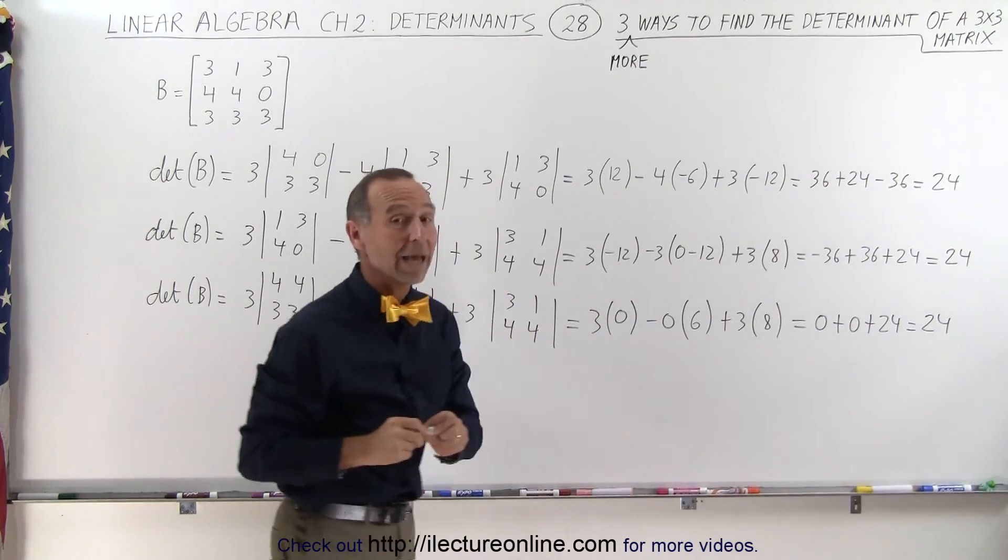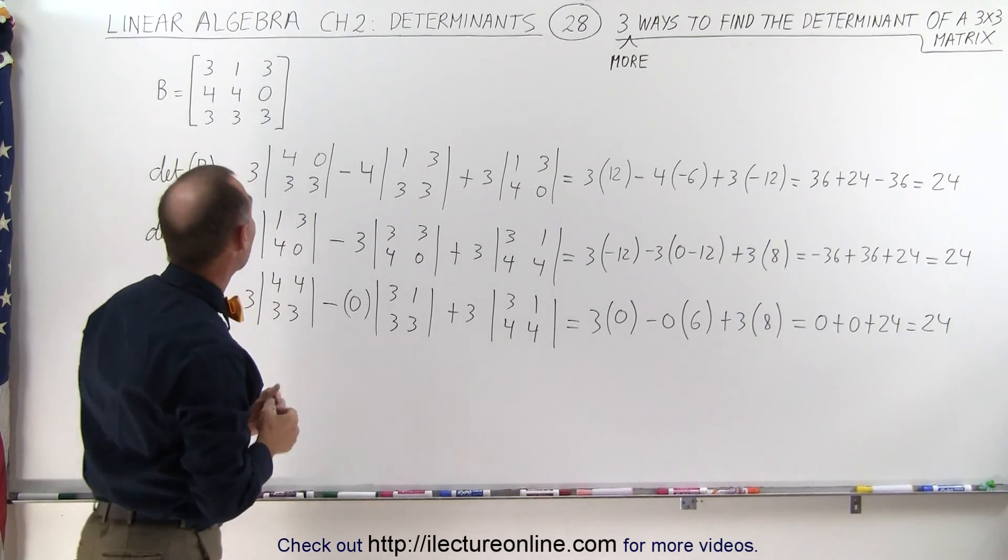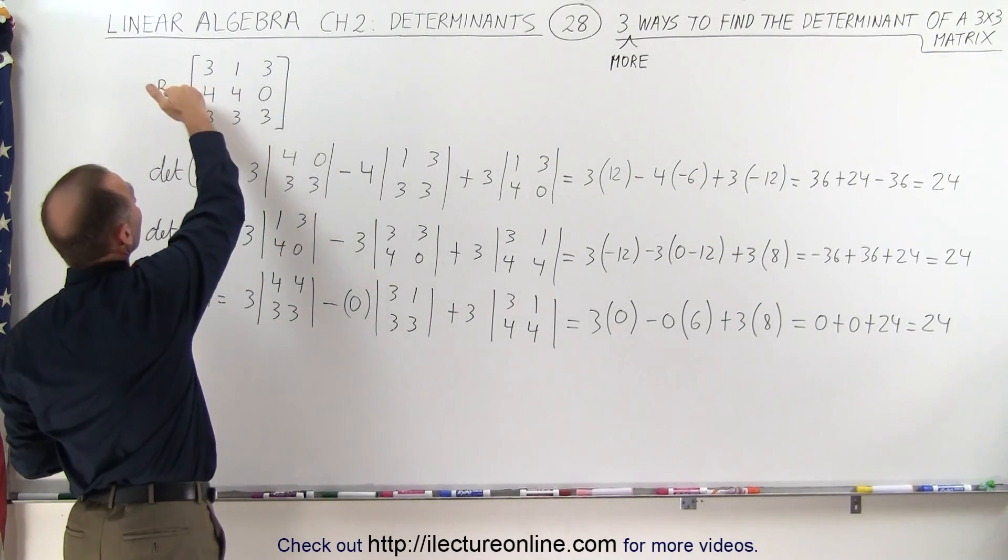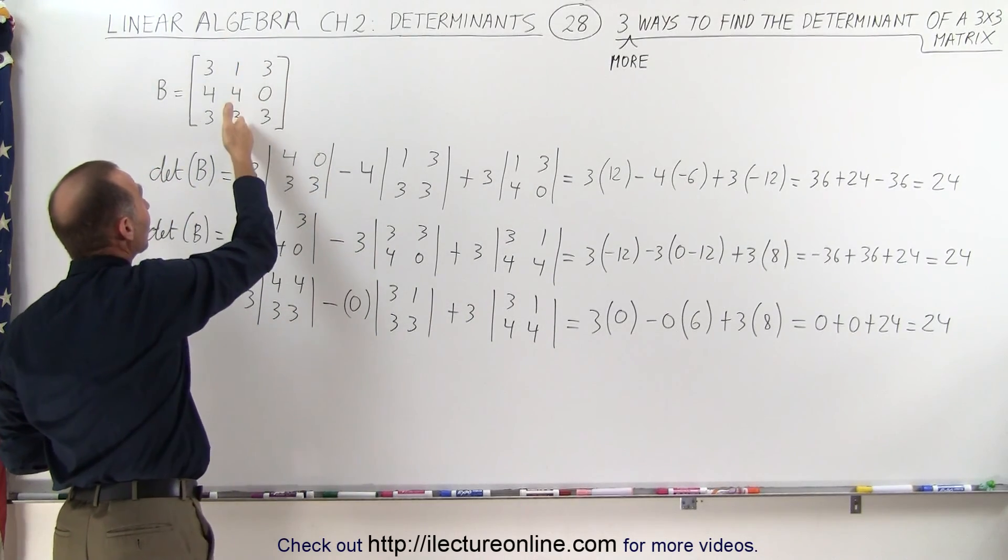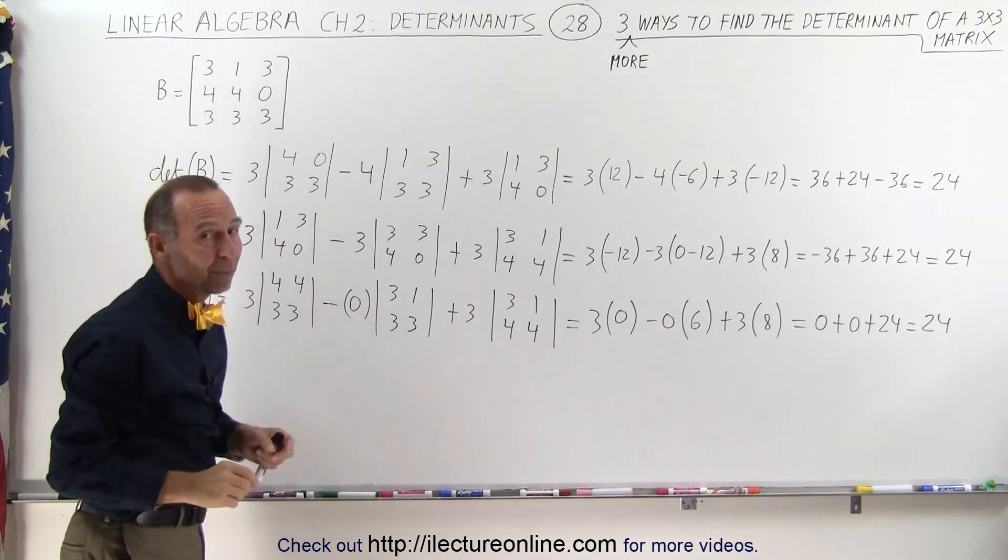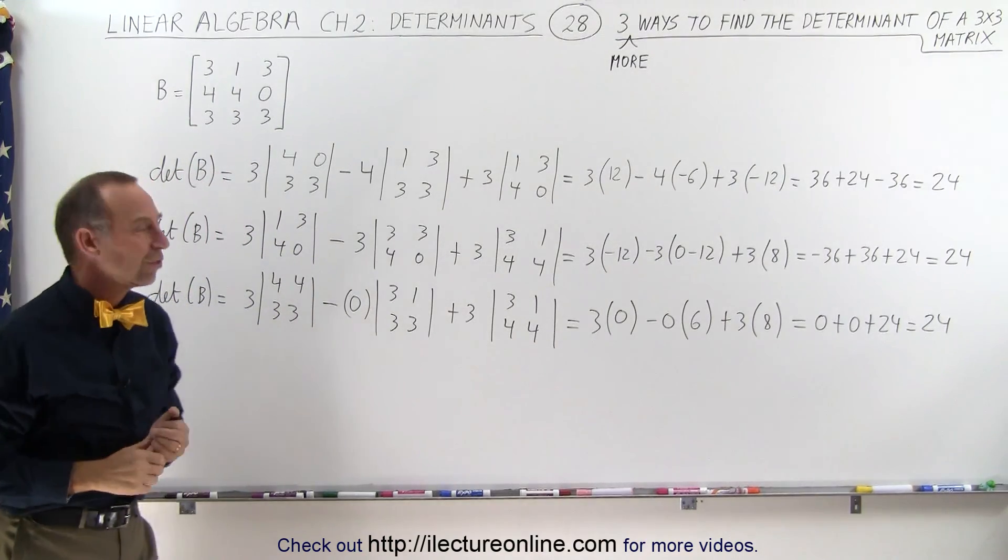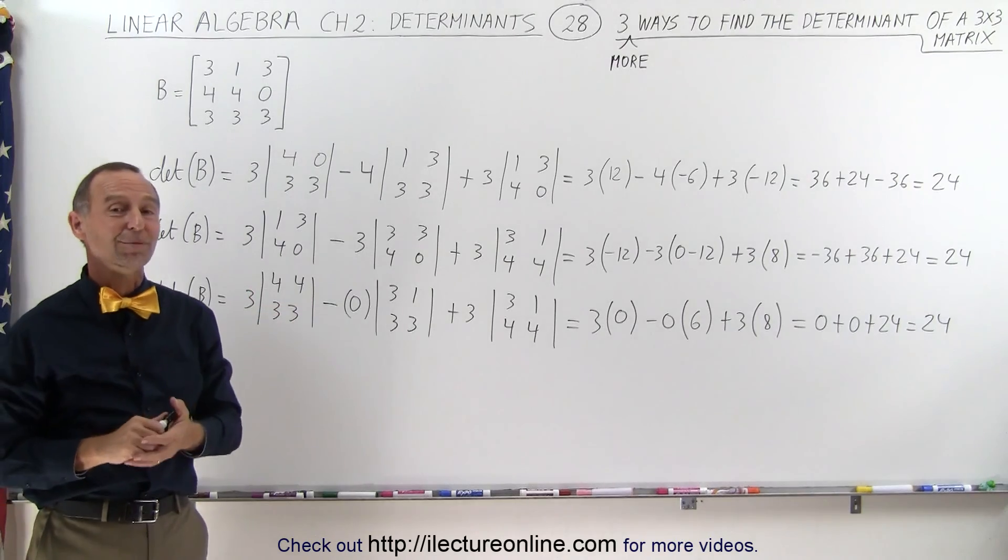You can see it doesn't really matter which row you take. Matter of fact, we can even go down the middle. We can go down this middle over here. Every single time, we'll end up with the exact same result, taking the determinant. And that's how it's shown.